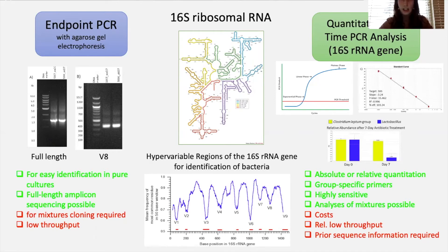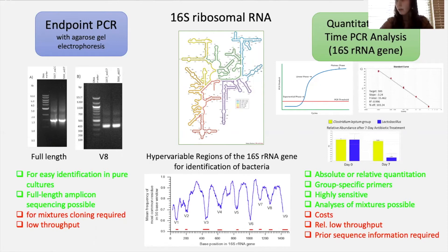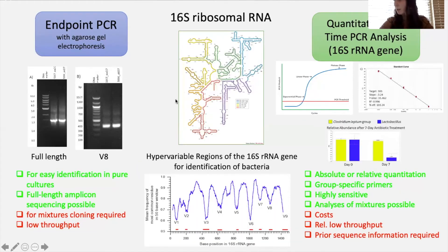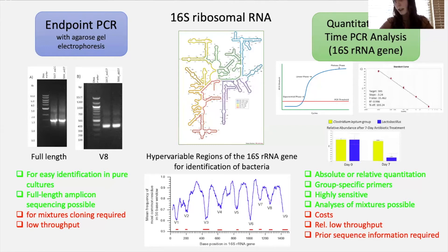16S rRNA genes are the main marker for reading these — they sort of act like a barcode, helping with identification and differentiation of bacteria. Endpoint PCR is very simple, but it's impossible to reflect the complexity of the microbiome, and only individual groups can be assessed. Quantitative PCR is quantitative, but it doesn't allow you to interrogate different organisms found in the microbiome.